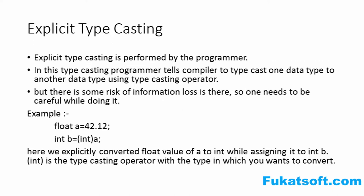In Explicit Type Casting, we want to store a different data type where we lose some information. We want to store a floating point value, which is 42.12. If we try to store a floating point value into an integer, Java will not allow it, because the integer cannot handle that value.